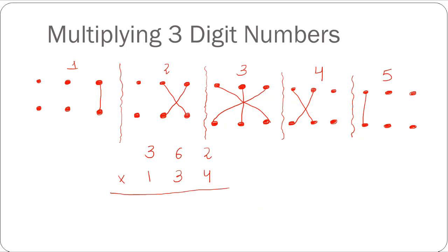Let's look at the example of multiplying 362 times 134. Before I begin solving this, remember one thing: except for the final fifth step, all the other steps — steps 4, 3, 2, and 1 — if by multiplying the numbers and adding the products you get a total greater than 9, then you'll carry forward the tens digit one place to the left and retain the units digit as it is. Let's solve this to clarify.